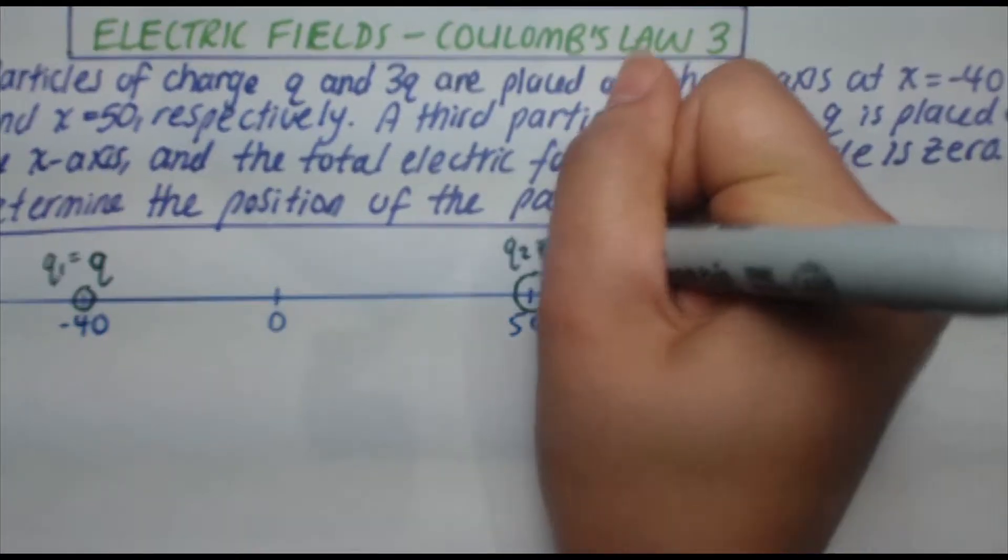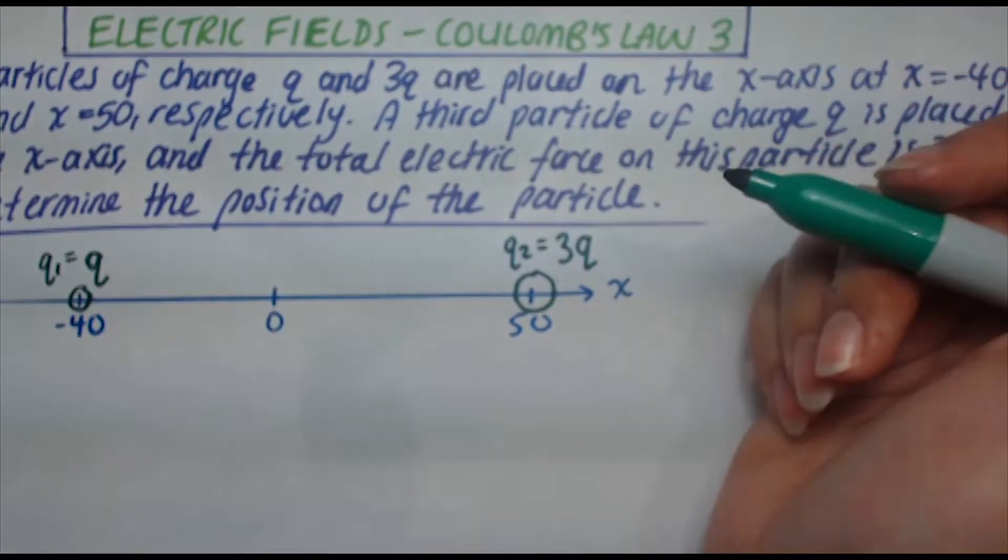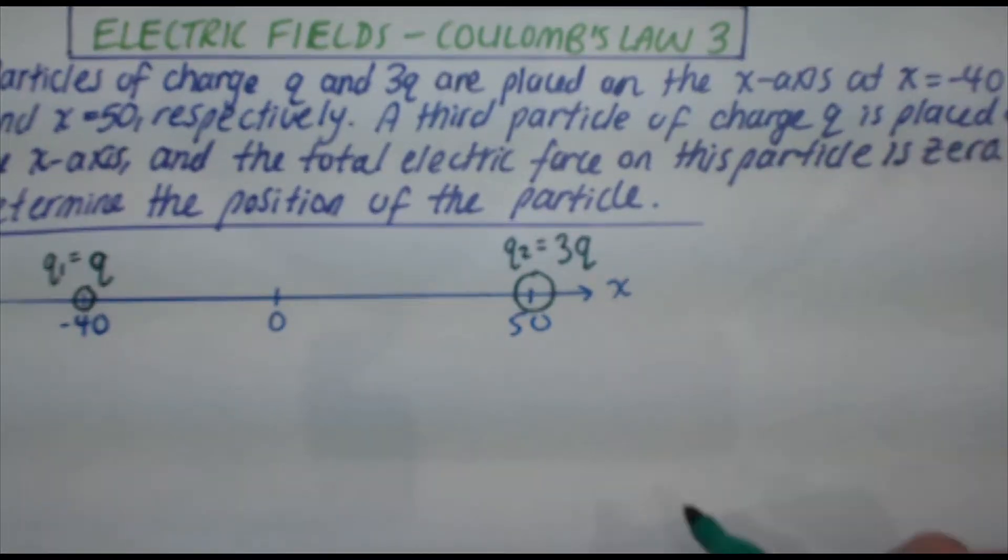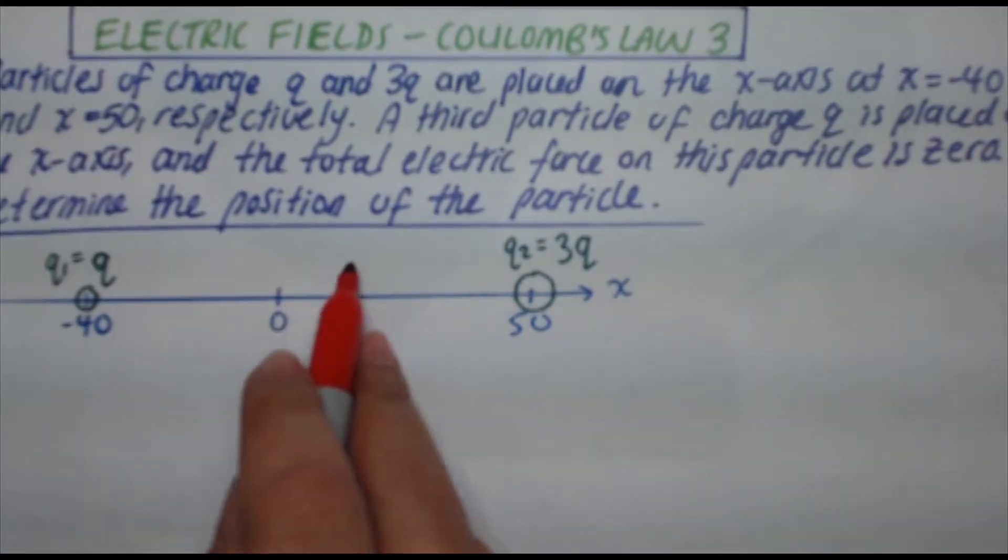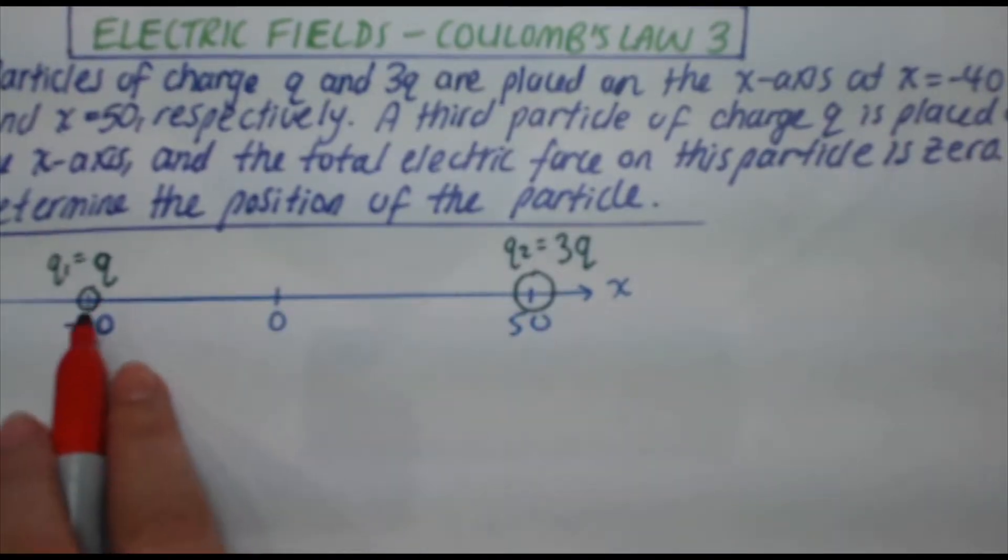q2 has a magnitude of 3q and we want to know where to put the third charge so that it's stationary.